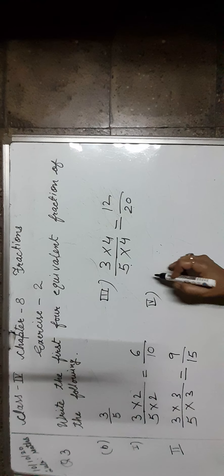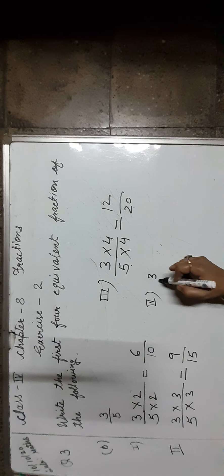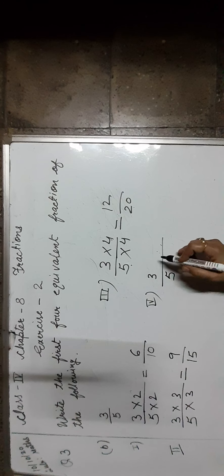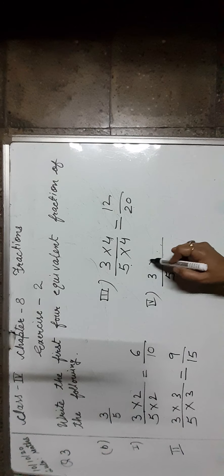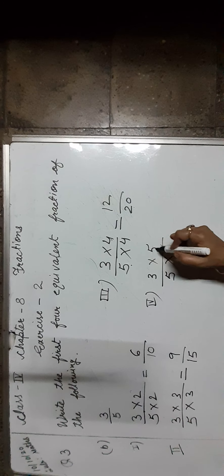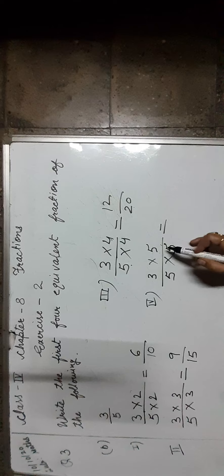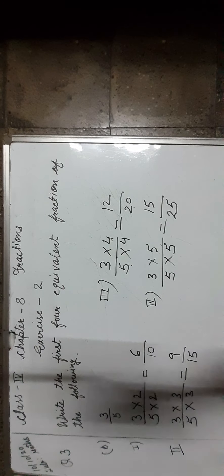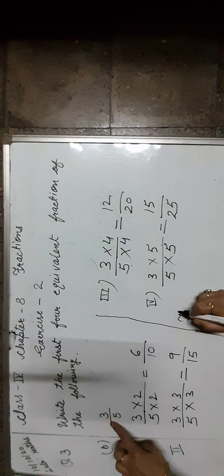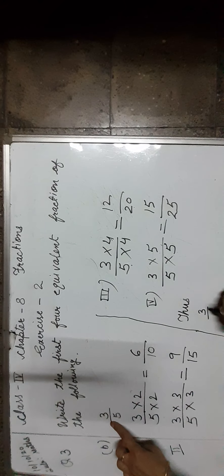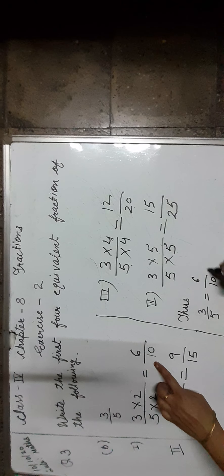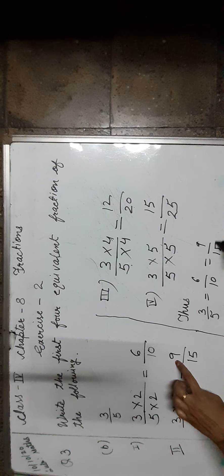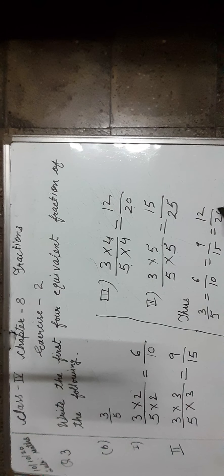Now let us find the fourth equivalent fraction of 3 by 5. We multiply both numerator and denominator by 5, which is equal to 15 upon 25. Thus, 3 upon 5 is equal to 6 upon 10, equal to 9 upon 15, equal to 12 upon 20, and equal to 15 upon 25.